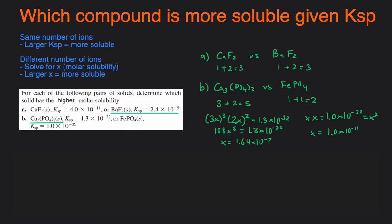So that's how you can determine which compound is more soluble if you're given the Ksp. If they give the same number of ions, larger Ksp, more soluble. If there's a different number of ions, solve for the molar solubility, and the one with the larger X value is going to be more soluble.